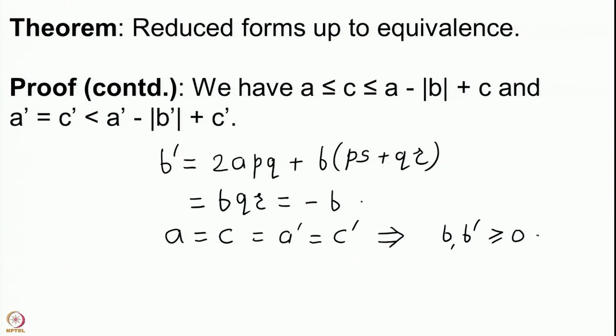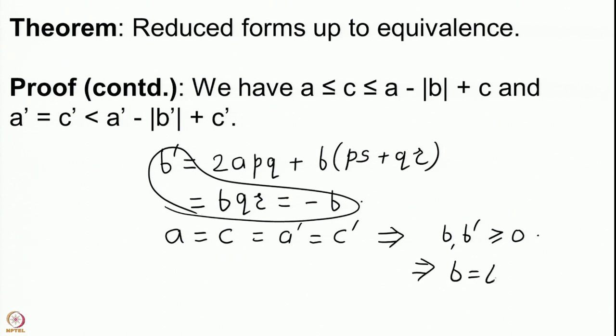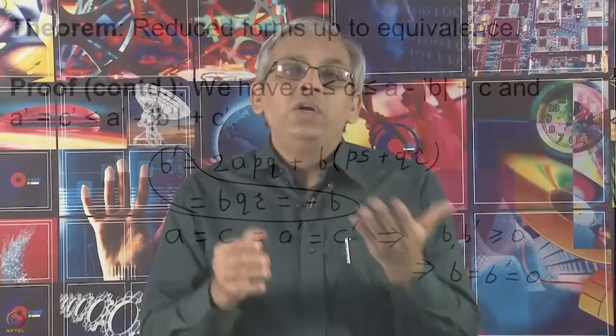This implies both b and b prime have to be greater than or equal to 0. But since b prime equals minus b, this forces both b and b prime to be 0. Our form then reads a times x squared plus a times y squared, and f prime also reads a prime times x squared plus c prime times y squared, which equals a times x squared plus c times y squared. So we are done with the second case.